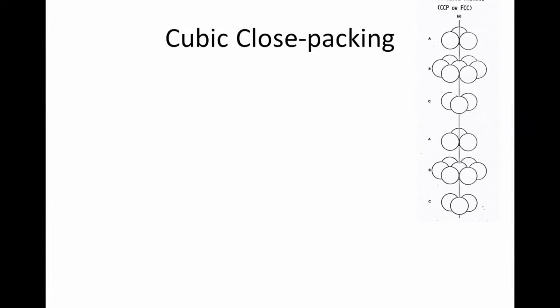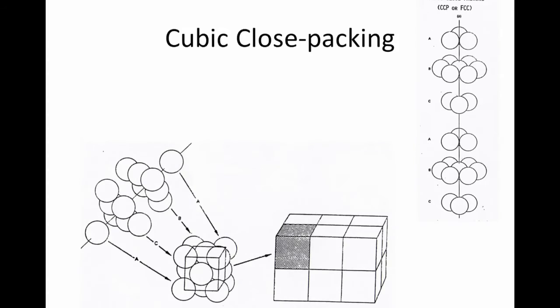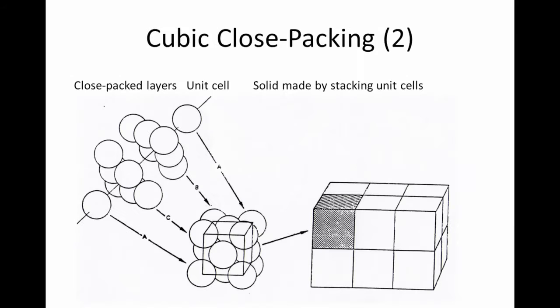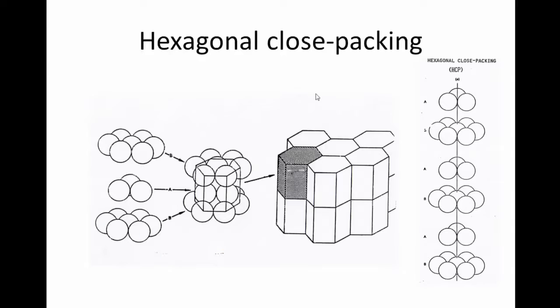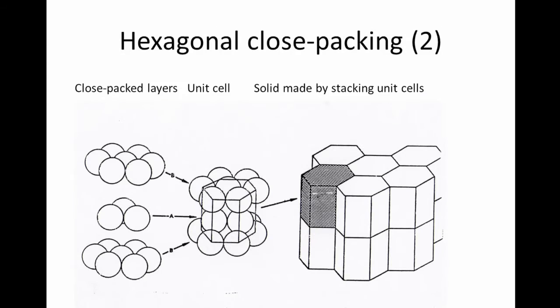If the layer stacking repeats every fourth layer, known as ABC-ABC packing, then the type of packing is cubic and the crystal structure is zinc blende. Whereas if the stacking repeats every third layer, which is AB-AB packing, this is called hexagonal close packing and the crystal structure is wurtzite.